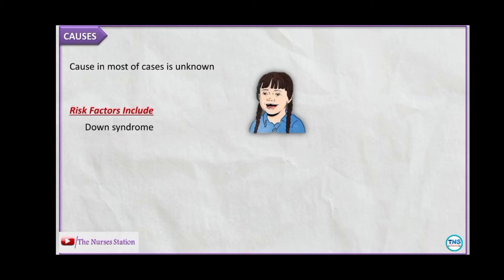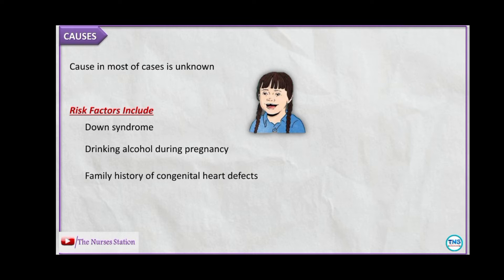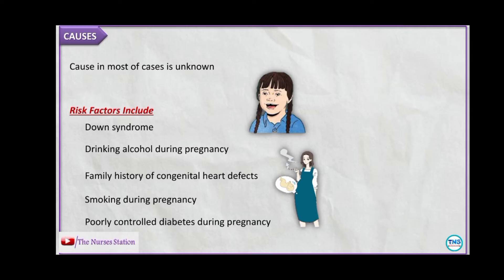The cause of most congenital heart disease is unknown, but risk factors for AV canal defect include Down syndrome — it is the most common cardiac defect in children with Down syndrome. Other risk factors include drinking alcohol during pregnancy, family history of congenital heart defects particularly among parents, smoking during pregnancy, and poorly controlled diabetes during pregnancy.